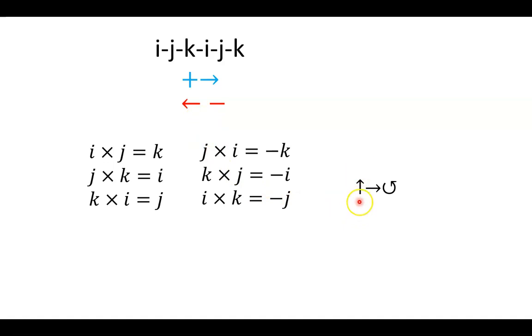Also keep in mind, this is our coordinate system or the direction of positive. Going up is positive, going to the right is positive, and going counterclockwise is positive. So now let's look at that example.